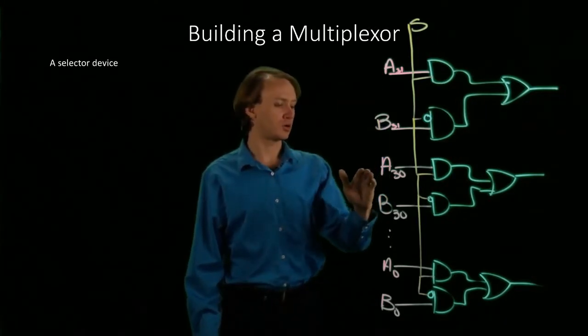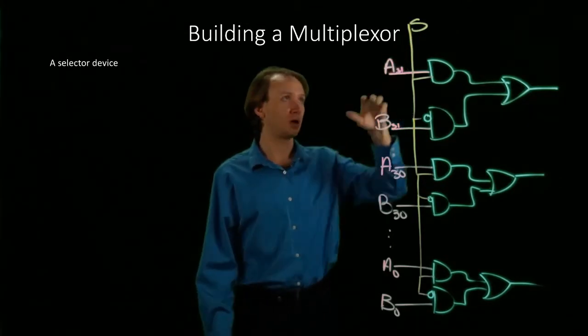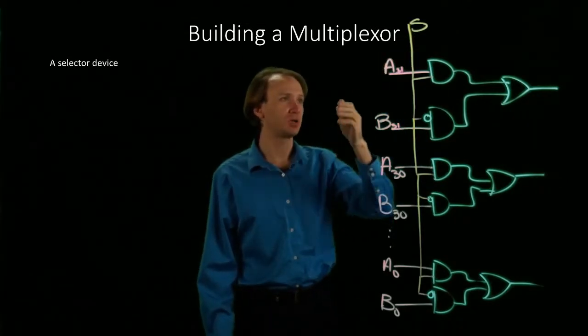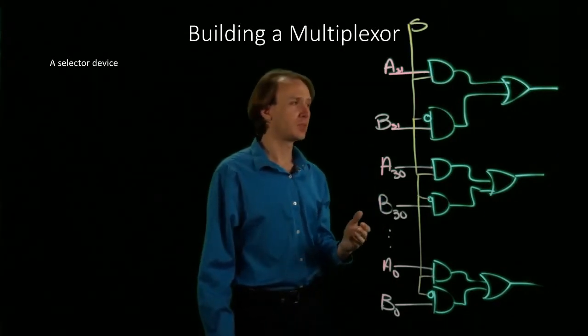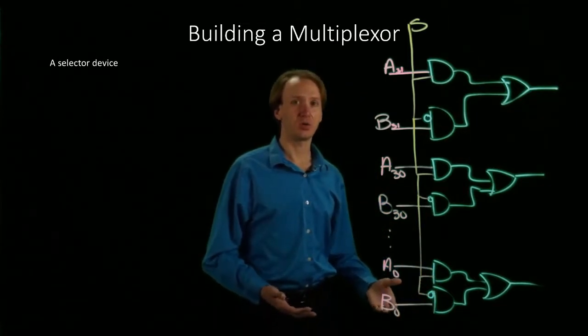For my input, I've got 32 wires for each of A and B, and one selector bit. That one selector bit is enough to choose between all the bits in A and all the bits in B. Then my output is the 32 bits that correspond to either A or B, depending on what I was interested in.